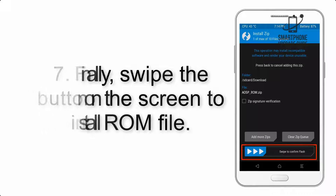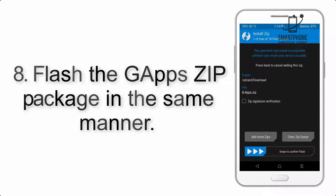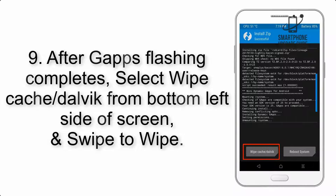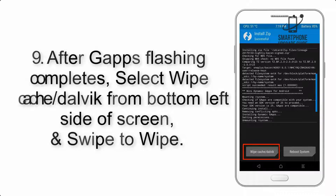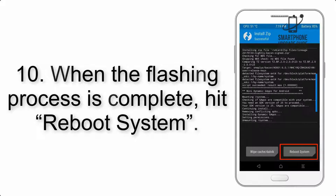Step 7: Swipe the button on the screen to install the ROM file. Step 8: Flash the GApps zip package in the same manner. Step 9: After GApps flashing completes, select Wipe Cache and Dalvik from the bottom left side of the screen and swipe to wipe.